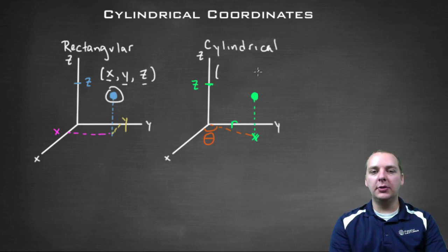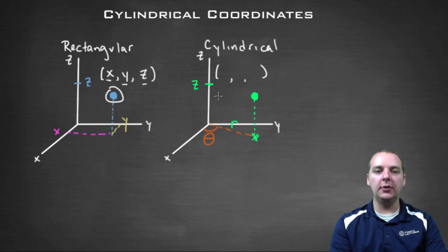So in cylindrical form you're still going to have an ordered triplet, so you'll still have three values here. But they won't be x, y, z necessarily. Instead we're going to display this point in a different way.